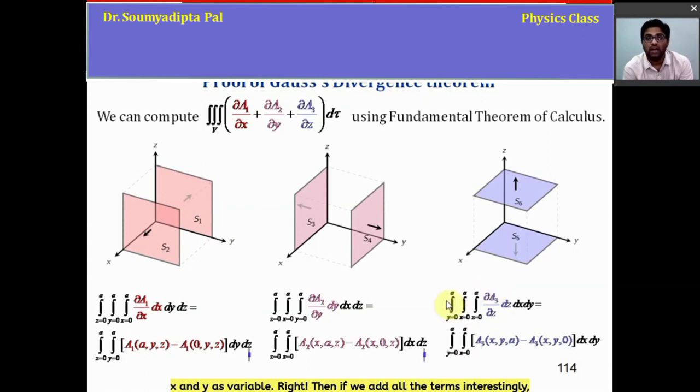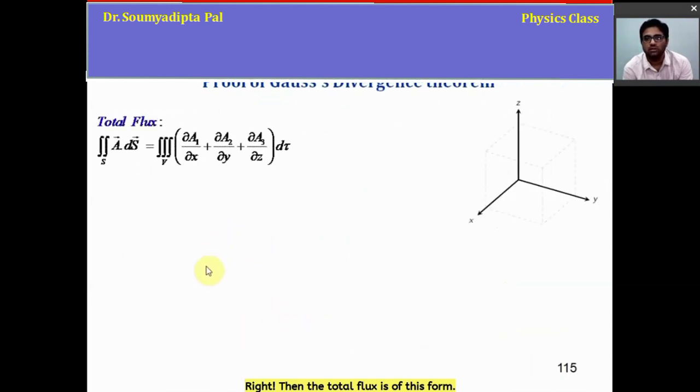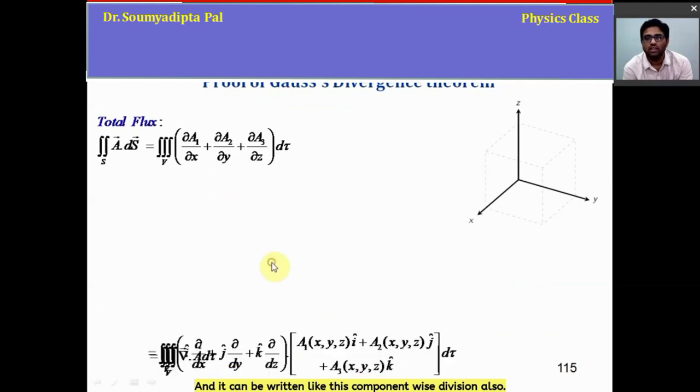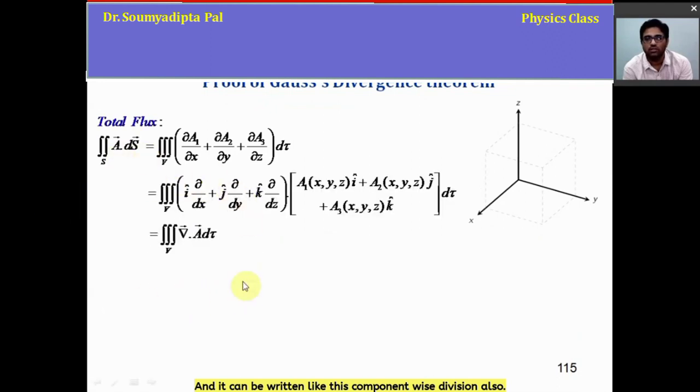Then if we add all the terms, interestingly, it is the total flux which we have already obtained in the previous slide. Then the total flux is of this form and it can be written like this component-wise division also.